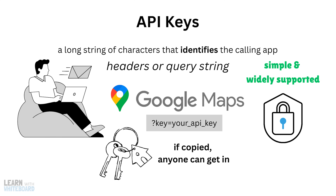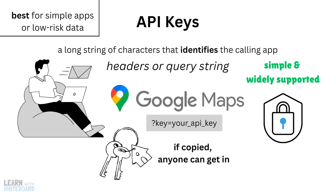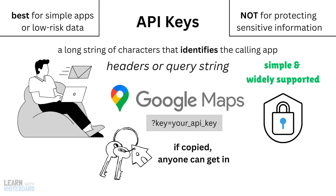For better understanding, think of it like a house key — if copied, anyone can get in. So API keys are best for simple apps or low-risk data, and not for protecting sensitive information.